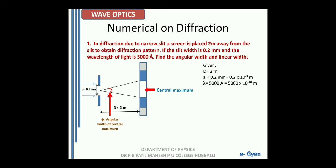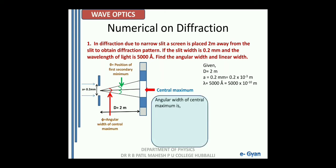The angular width of the central maximum is 2θ, where θ is the position of the first secondary minimum. So the angular width φ = 2θ = 2 × lambda / a. Substituting the values: φ = 2 × 5000 × 10⁻¹⁰ / (0.2 × 10⁻³). On calculation we get the angular width φ = 0.005 radians.